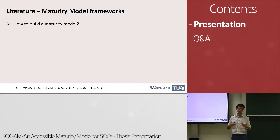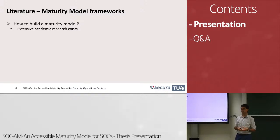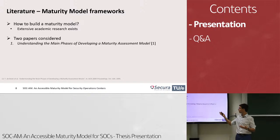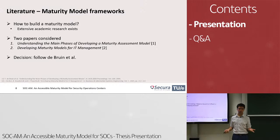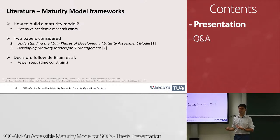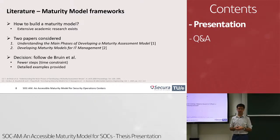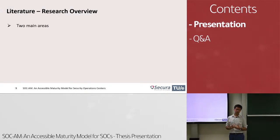Now that we know we want to make a maturity model, how do we build one? There is a lot of literature on the subject. I focused on two main papers: the first is 'Understanding the Main Phases of Developing a Maturity Model' by De Bruijn et al., and the second, made four years later, is 'Developing Maturity Models for IT Management' by Becker et al. The decision was made to follow the first one — it has fewer steps, and since I only had six months for research and development, it was easier. It also provides very detailed examples for each step.